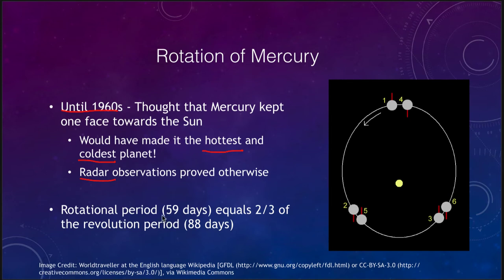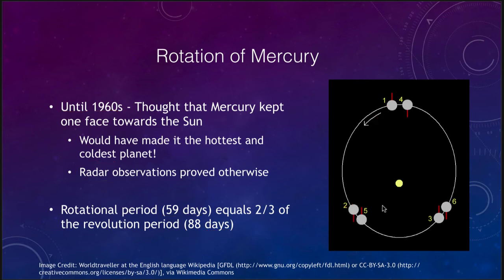It turns out that Mercury's rotational period of 59 days is two thirds of its orbital period of 88 days. This means Mercury is locked into what we call a resonance with the Sun — but it's not a one-to-one resonance where it rotates once for every revolution. It's actually a two-to-three resonance. So two years on Mercury are the equivalent of three days. The diagram shows that at position one Mercury has rotated, and moving to position two it has rotated halfway around, now pointing in a different direction in space.